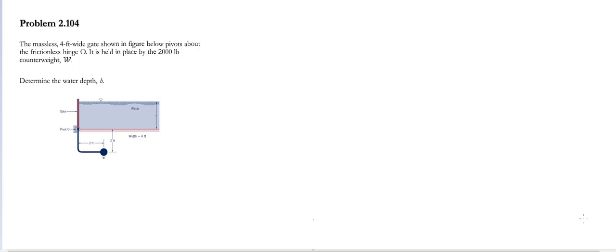Problem 2.104. In this problem we have a massless, 4 feet wide gate shown in the figure below, which pivots about a frictionless hinge located at O. It is held in place by a 2,000 pound counterweight shown in the figure.